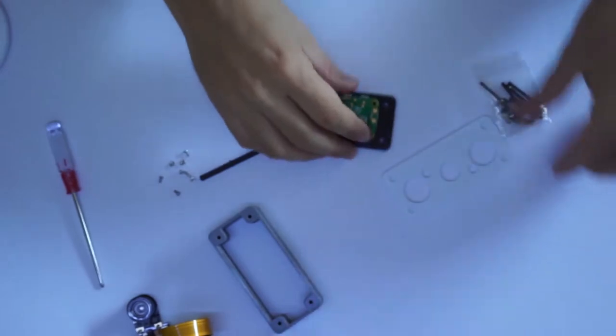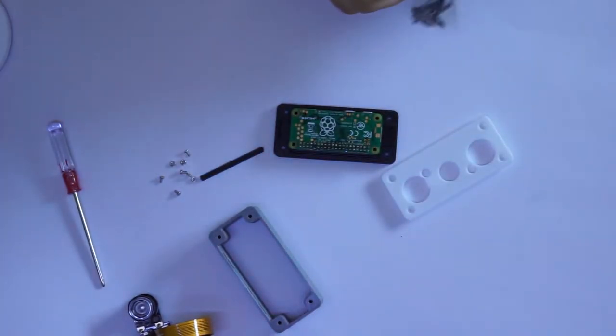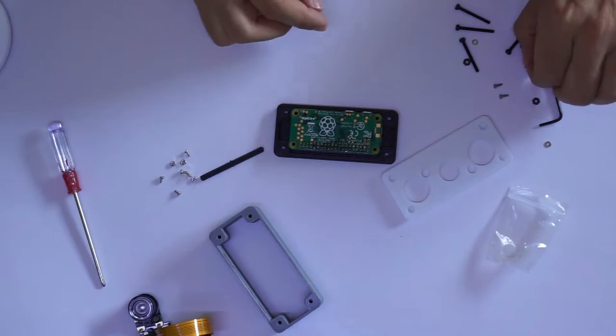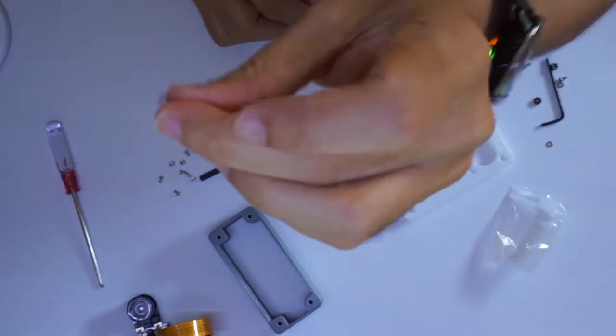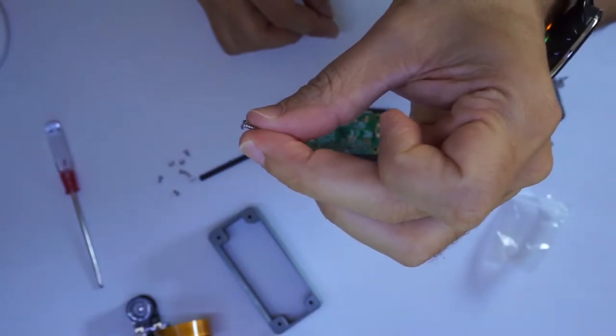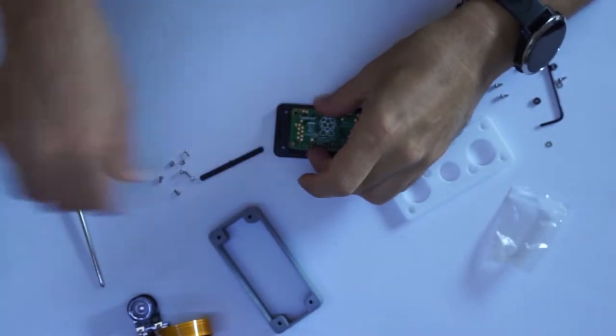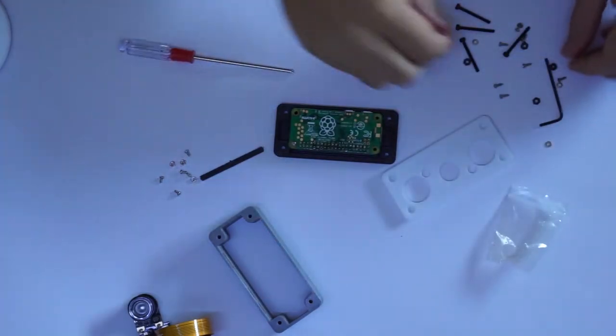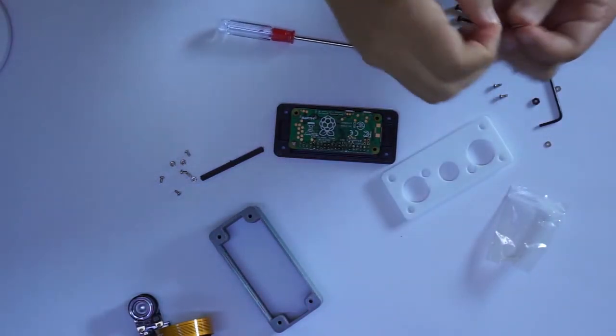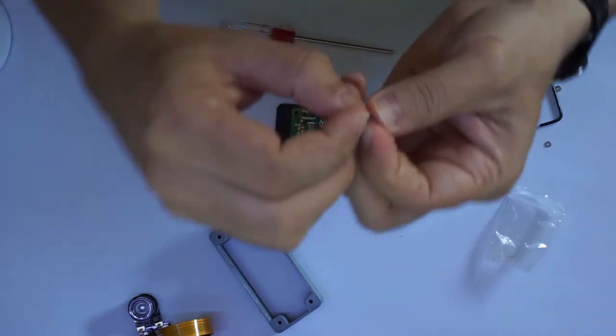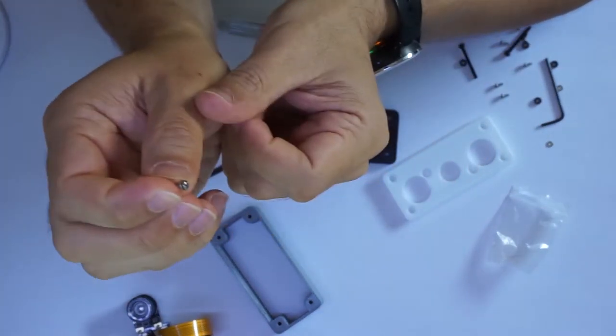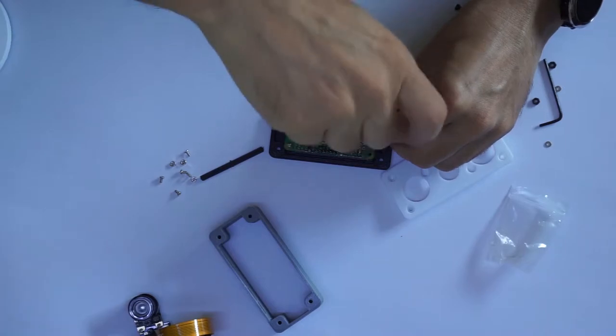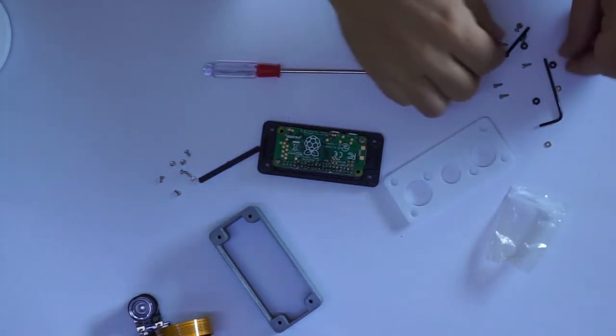I have this bag of screws for the case. So I have these small screws. This should hold the Raspberry into place. And also I think the washers are for it. I have small washers.